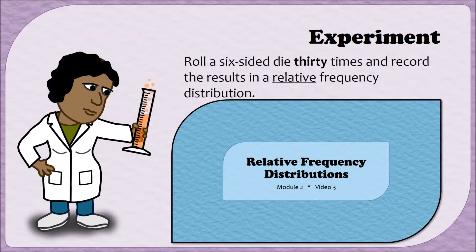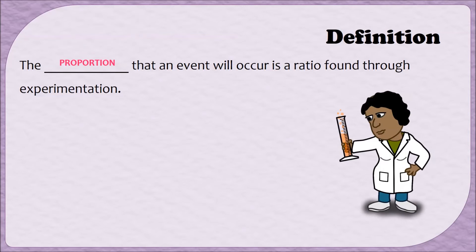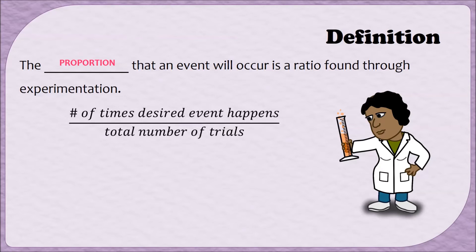We're going to come back to this experiment very shortly, but first let's start with the definition. The proportion that an event will occur is a ratio found through experimentation. This ratio is found by dividing the number of times a desired event happens by the total number of trials. For example, if you toss a coin seven times and only twice it comes up heads, then the proportion of heads would be two out of seven.